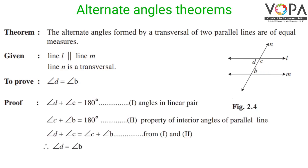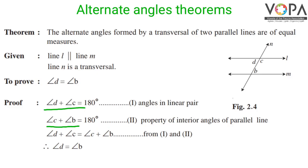In the proof: angle D plus angle C equals 180 degrees — statement 1 — as they are angles in a linear pair. Angle C plus angle B equals 180 degrees — statement 2 — by the property of interior angles of parallel lines. Since the right-hand sides are equal, angle D plus angle C equals angle C plus angle B. Angle C cancels from both sides, giving angle D equals angle B. Therefore, alternate angles are of equal measure.